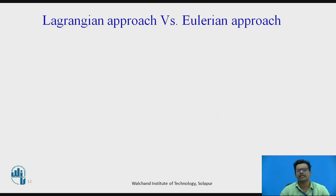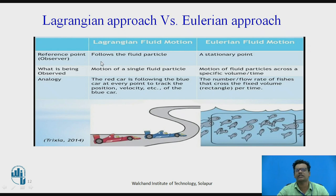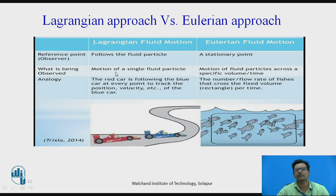Now we will differentiate between the Lagrangian and Eulerian approach parameter by parameter. The first parameter is the reference point or observer. In the Lagrangian approach, we follow the fluid particle — we label it and move along with it, so the observer is not stationary. Whereas in the Eulerian approach, the observer is stationary; we fix the point and observe changes at that point. In the Lagrangian approach, what is observed is the motion of a single fluid particle, and all mathematical expressions are for that single particle. In the Eulerian approach, the motion of fluid particles across a specific volume over time is considered.